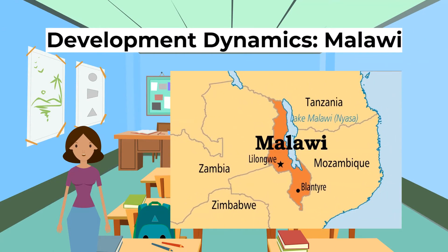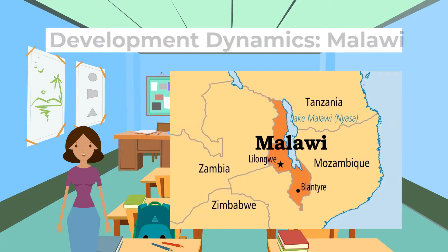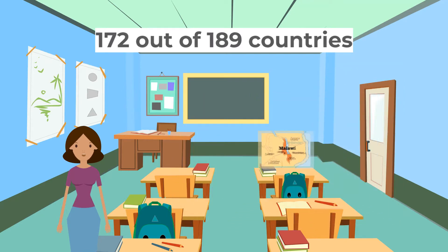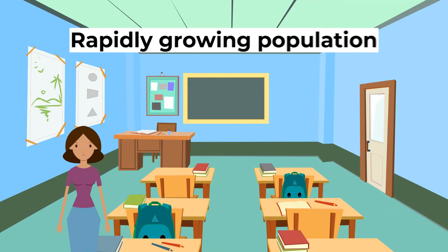Malawi is a landlocked country found in southern Africa. It has a rank on the Human Development Index, or HDI, of 172 out of 189 countries. Malawi ranks poorly on the HDI because firstly it has a rapidly growing population.